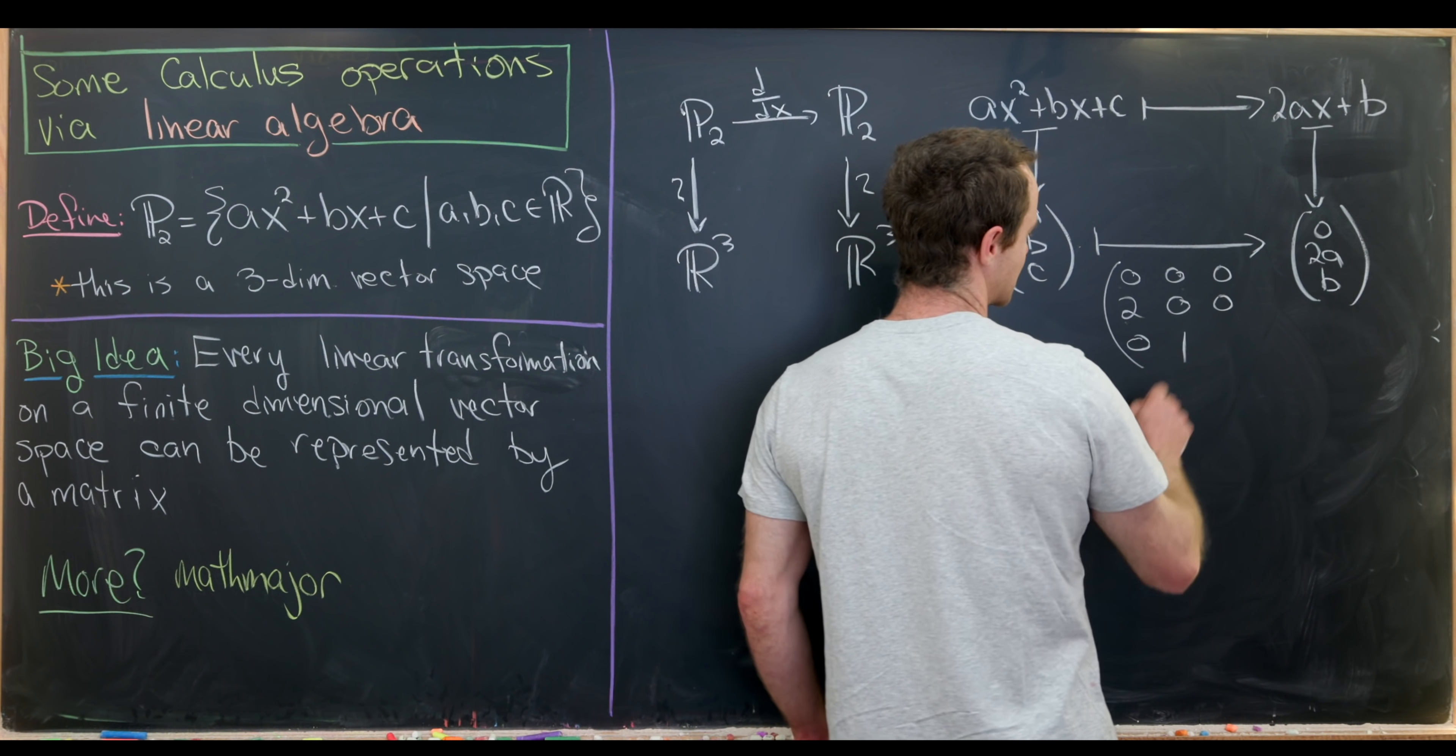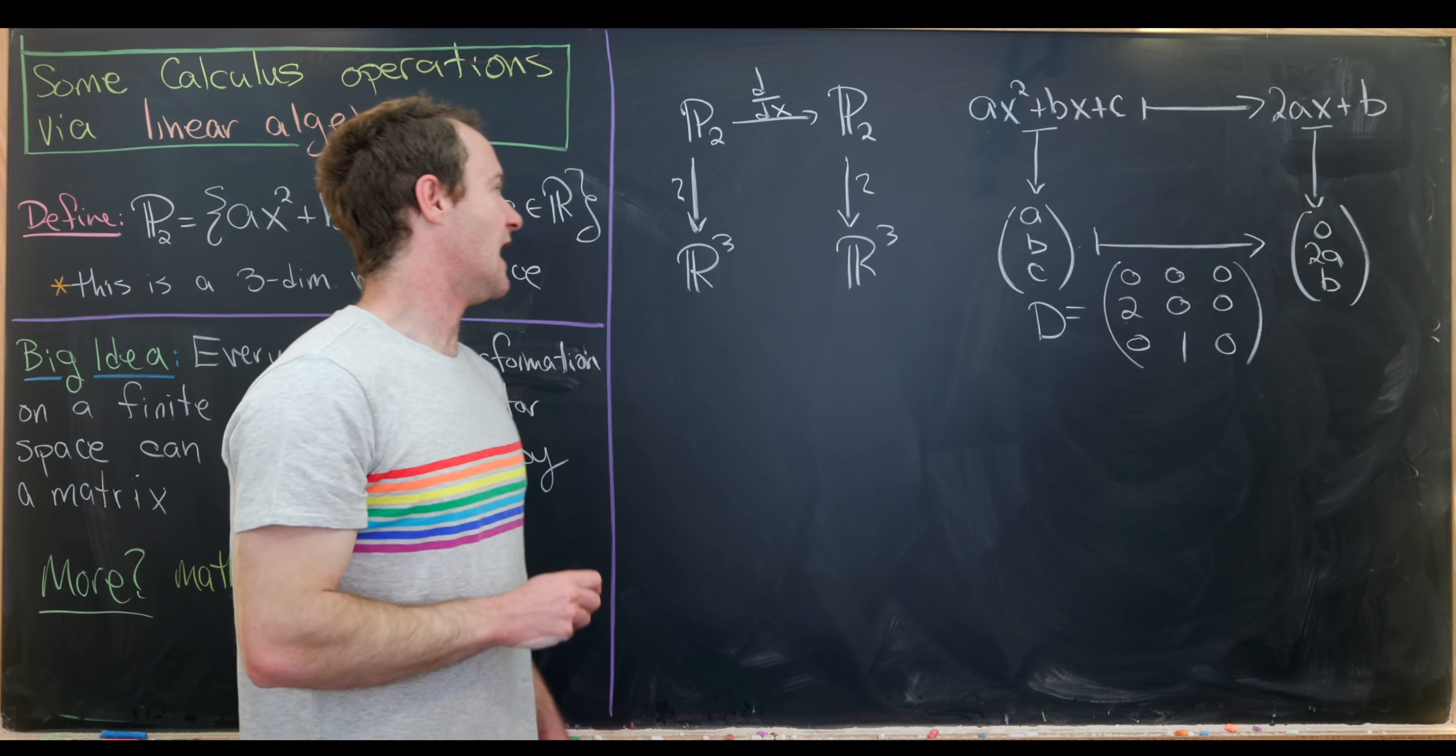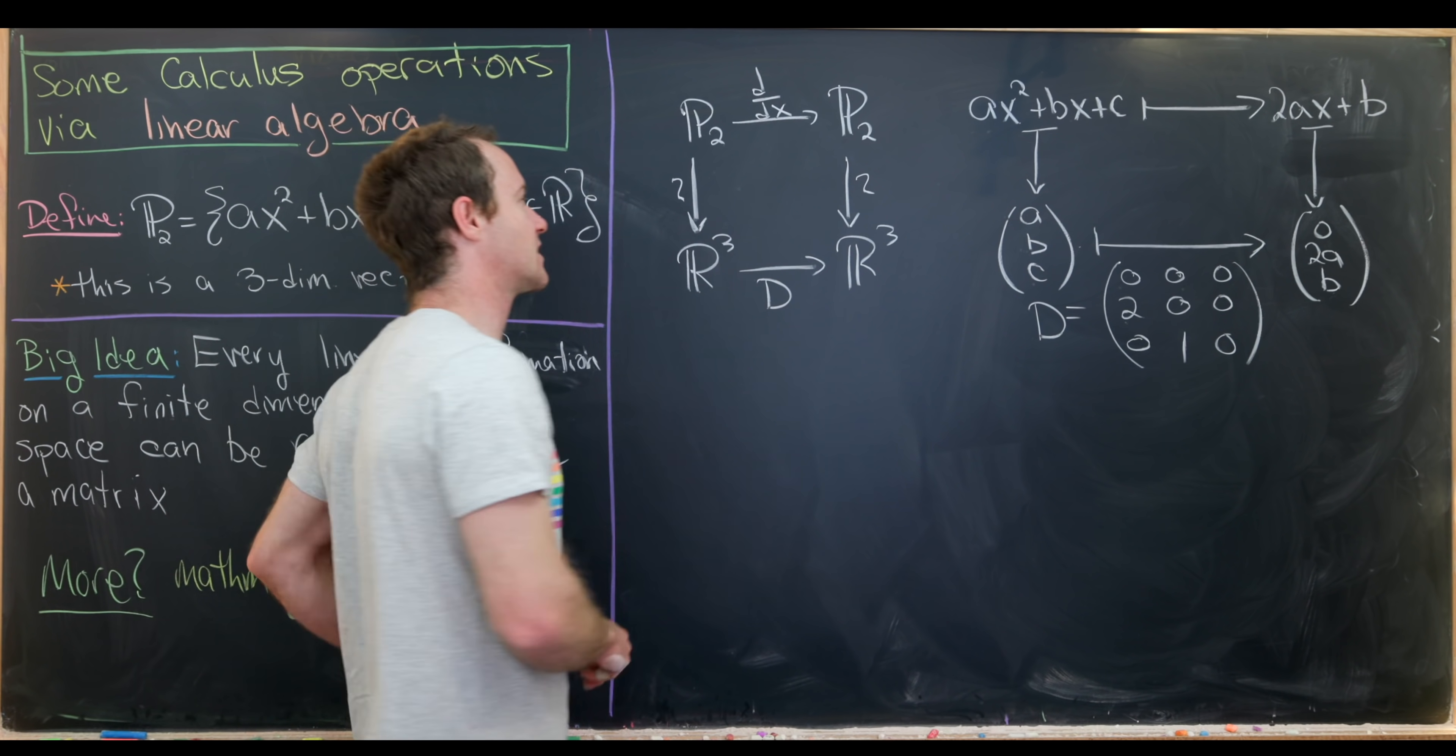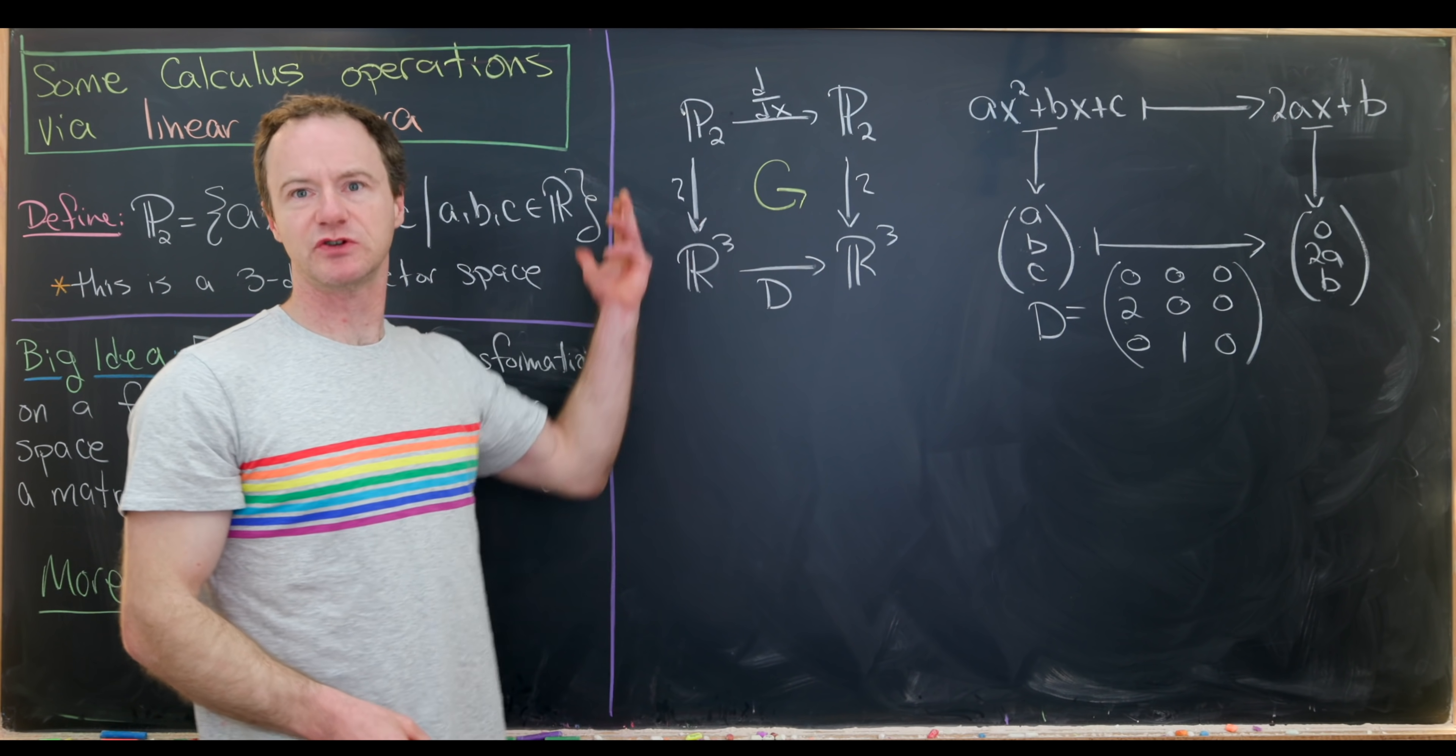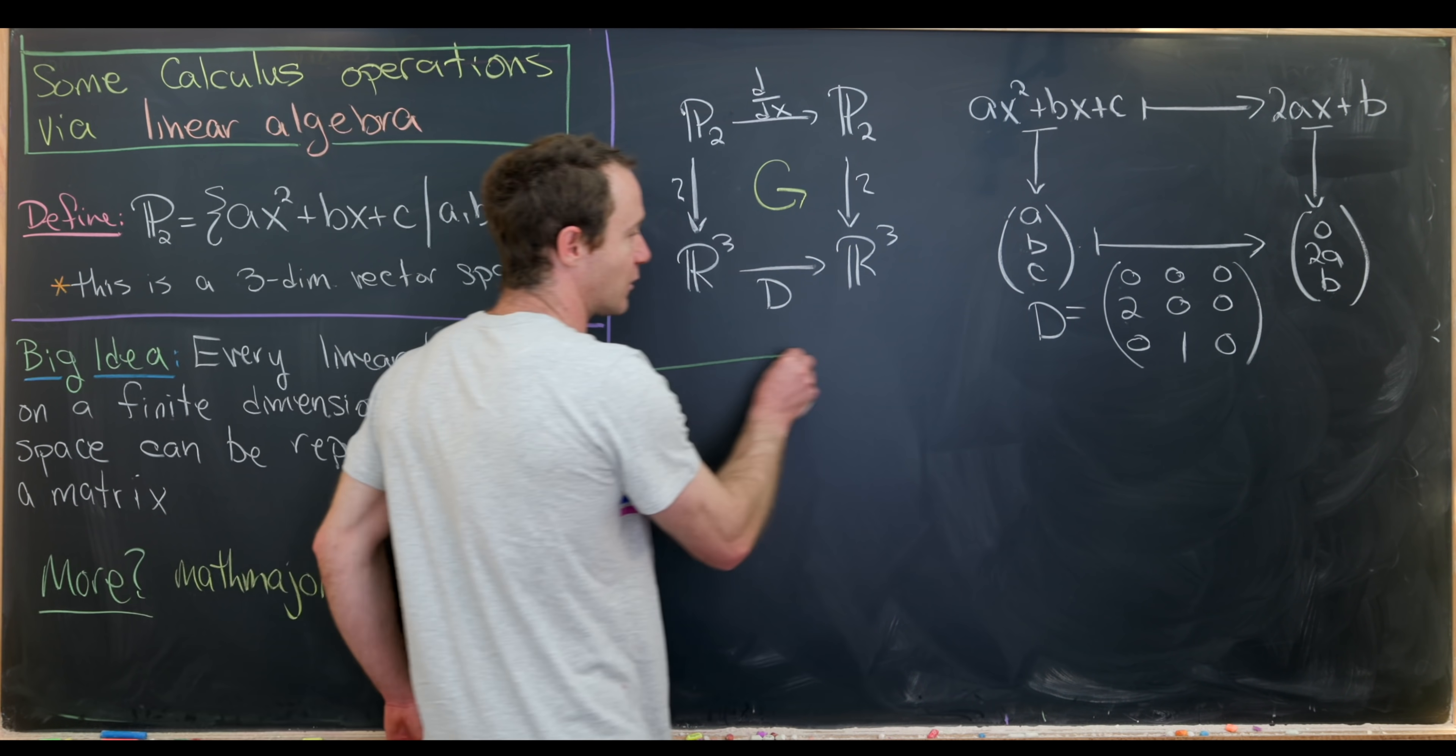And then likewise for this last row, we have 0, 1, 0, because we don't need any contribution from a or c, but a single contribution from b going right there. So maybe we could call this matrix D, and then put the map over here that goes from R3 to R3 defined by D. And so that would make this into something called a commutative diagram. In fact, what we've done is found or represented this derivative operator, which we know is a linear operator from calculus 1, as a matrix, as promised by this big idea.